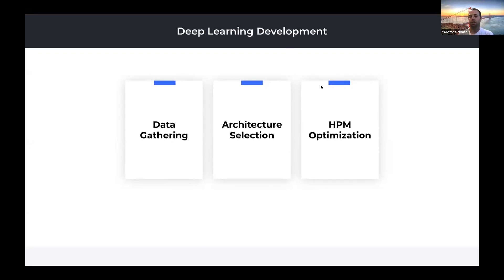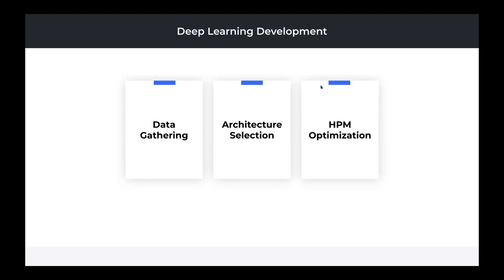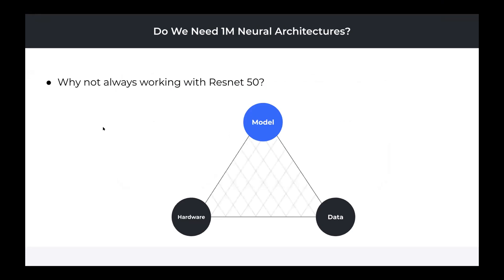That best model is the combination of the data, the architecture, and the training regime. So where did the feature engineering go in deep learning? The interesting part is that deep learning does feature engineering automatically, and what performs the feature engineering is actually the neural architecture we've selected. Different neural architectures extract different features for a given dataset, so we still need to select the architecture in a way that will represent the right features.